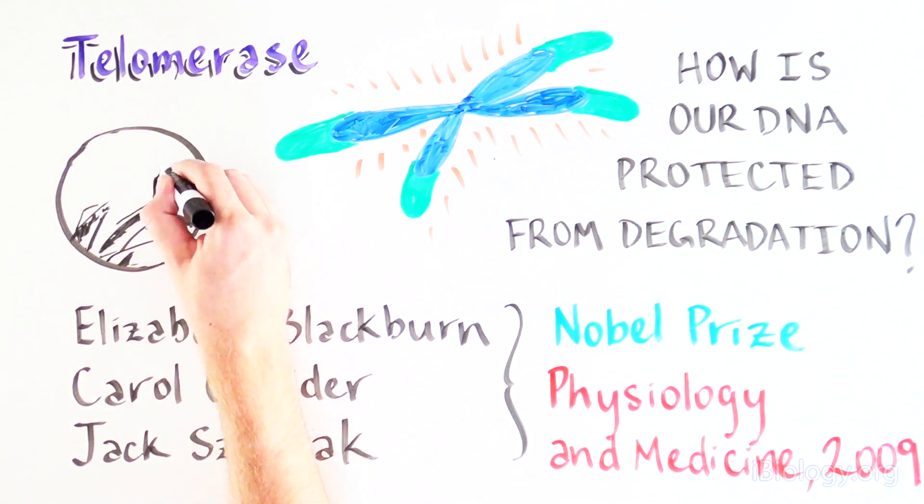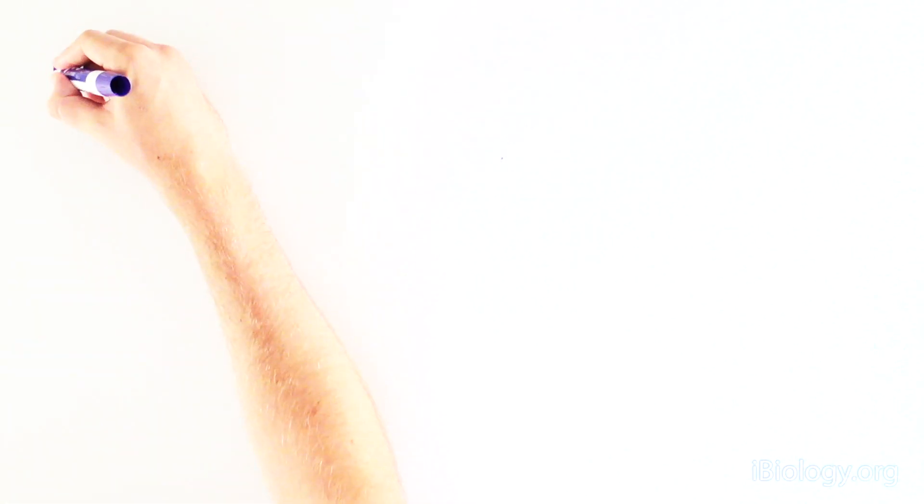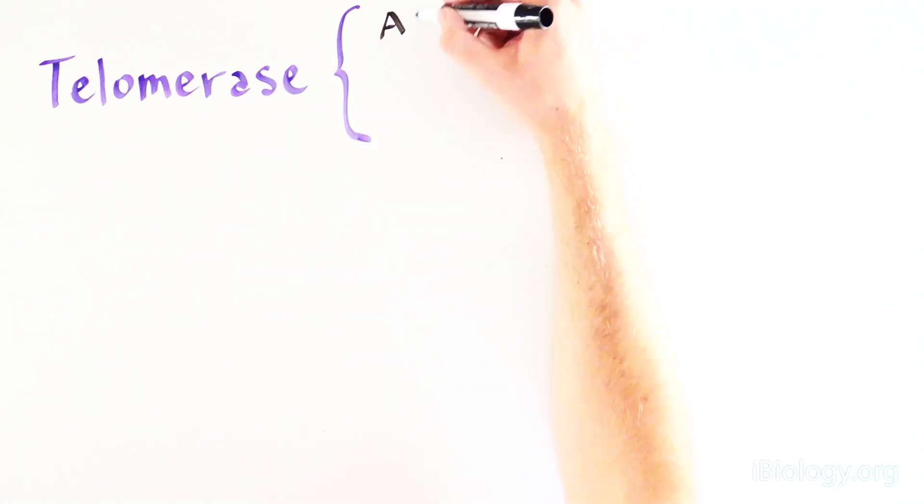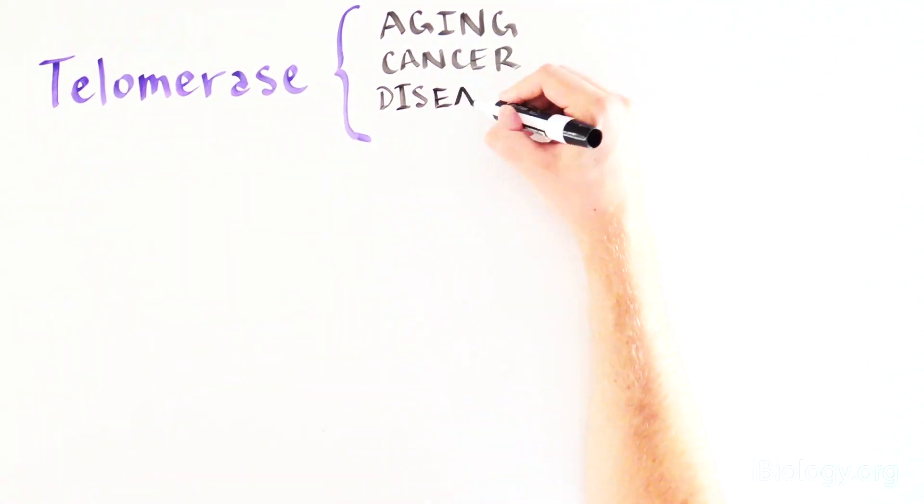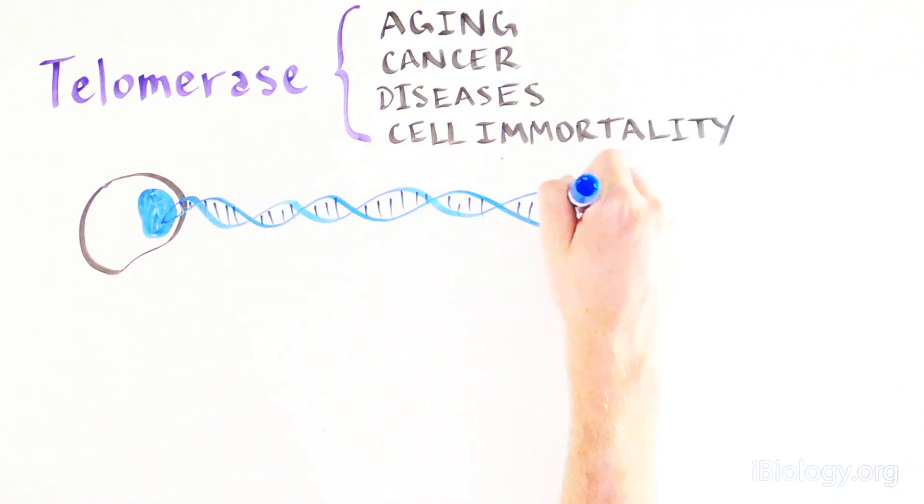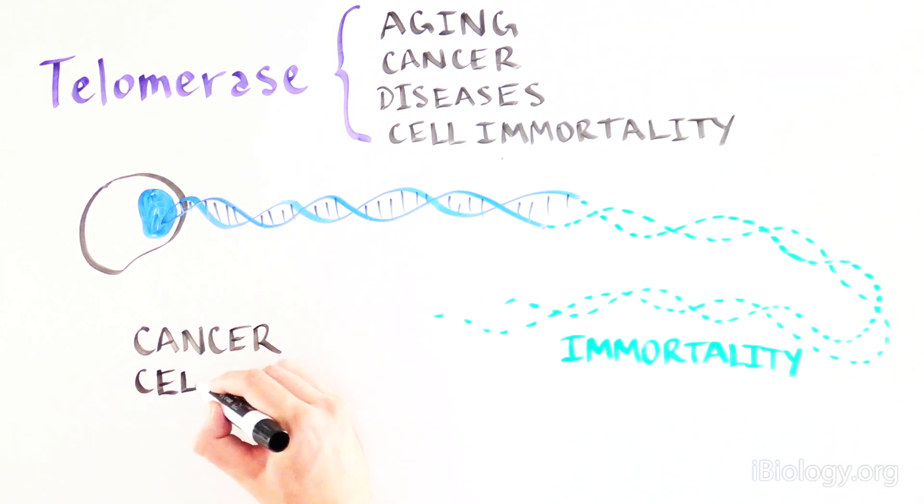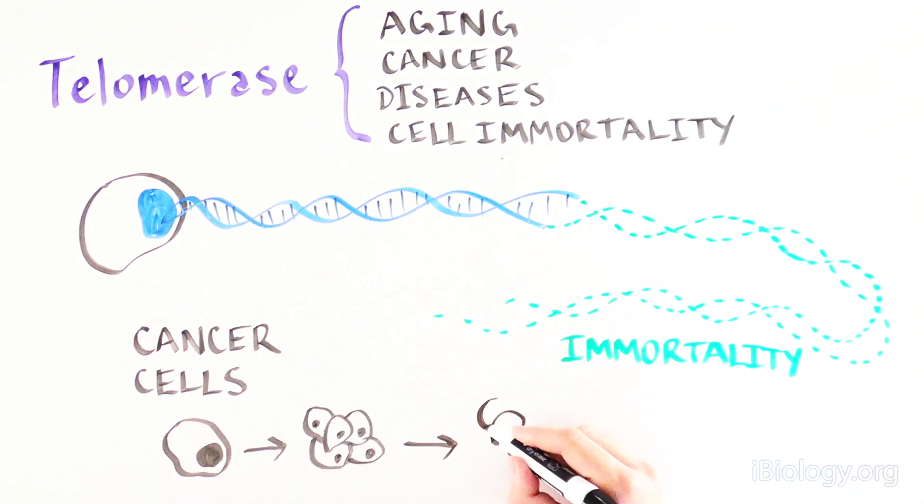Telomerase was discovered by scientists interested in learning more about our own biology. Since the discovery of telomerase, we now know that this enzyme plays many important roles in aging and diseases such as cancer. By extending chromosomes, telomerase can make cells immortal. And cancer cells use this enzyme to divide essentially indefinitely.